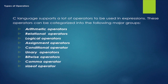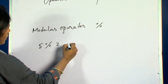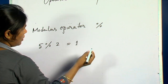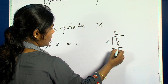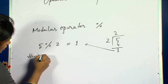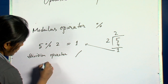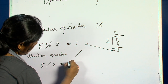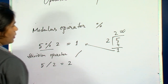For example, 5 modulus 2 gives 1 — that means it gives the remainder of the division. The division operator is denoted by the slash symbol, and 5 divided by 2 gives 2, which is the result of the division. The remainder of that division is 1.